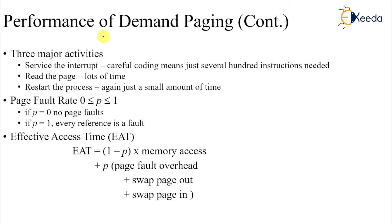There are three major aspects. We'll try to combine all of these into some sort of time measure for the worst case scenario. The three major activities are: servicing the interrupt, reading the page, and restarting the process. The page fault rate p is between 0 and 1 — p equals 0 means no page fault, p equals 1 means every reference causes a page fault.